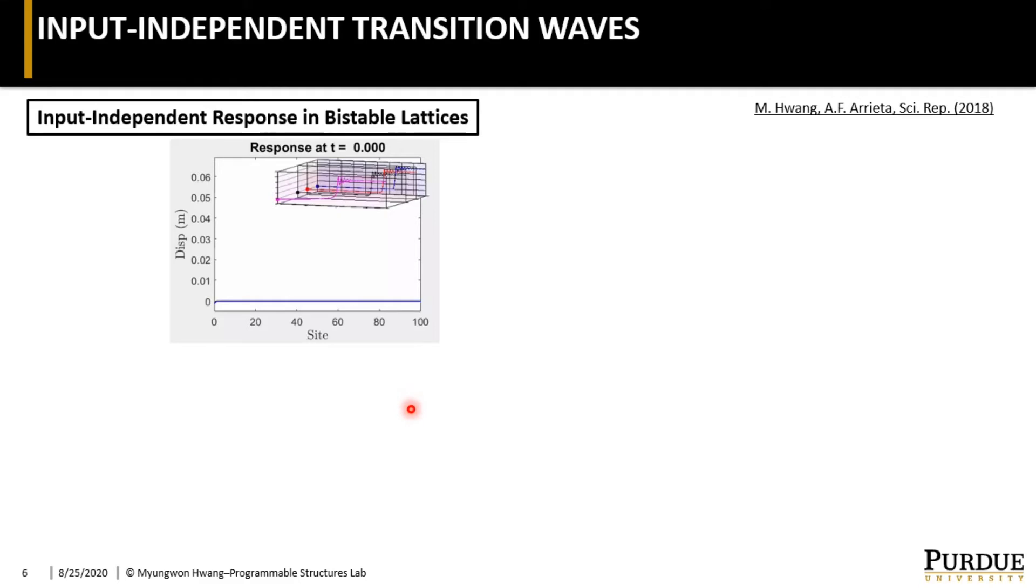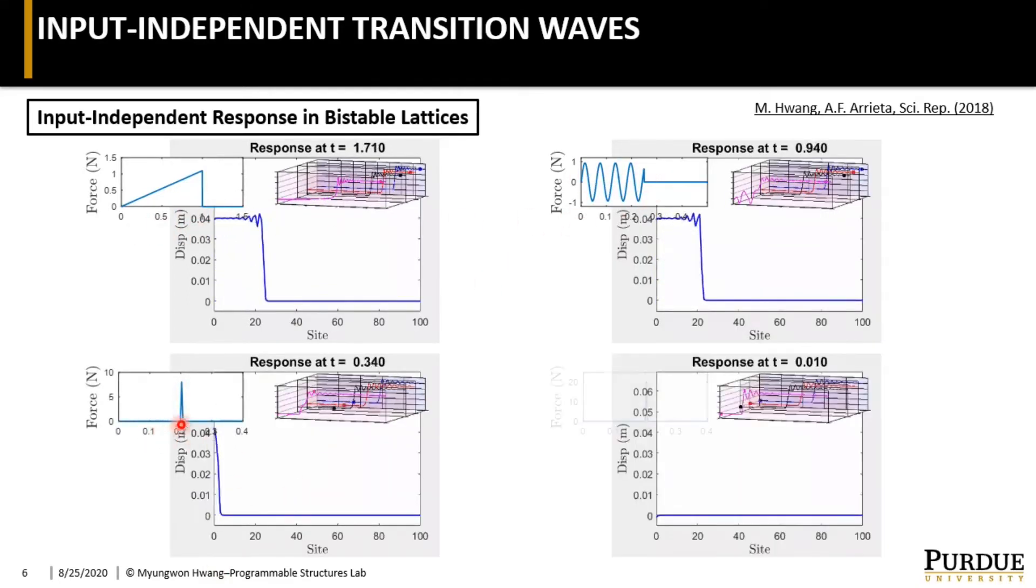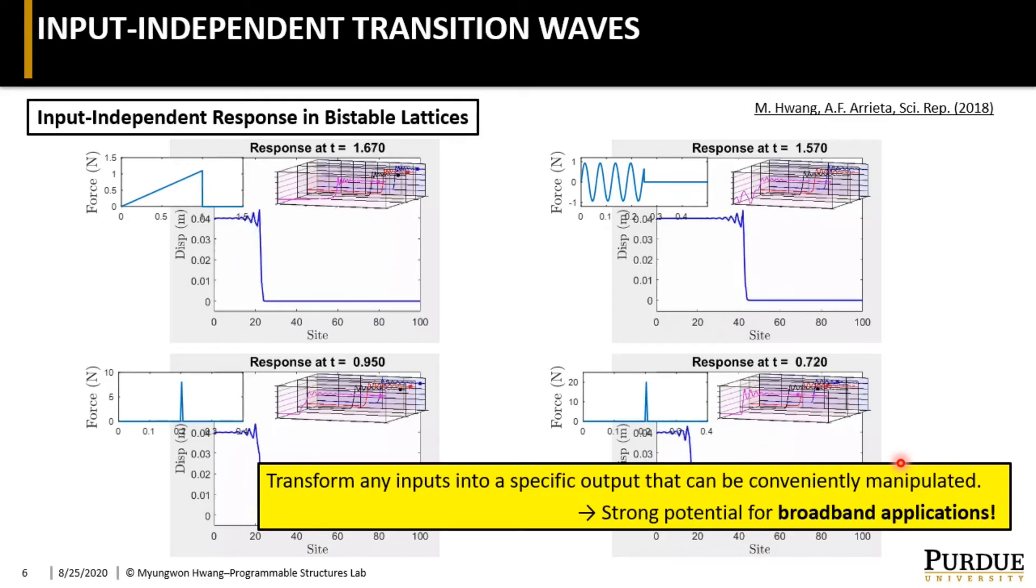What is actually more interesting about this type of lattice is that the responses are totally independent of the input excitations as long as the transition waves are triggered by any means. In other words, whether it is a quasi-static input, sinusoidal input, or impulsive input, once transition wave is generated, their responses are exactly the same. So it can literally transform any type of input into a specific type of output that can be conveniently manipulated, suggesting a strong potential for broadband applications.